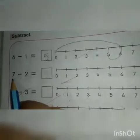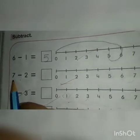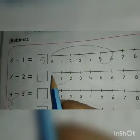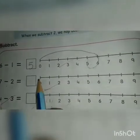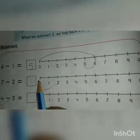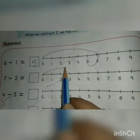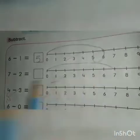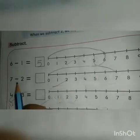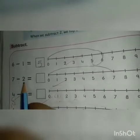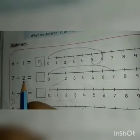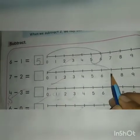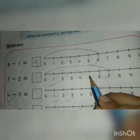Go to next line. Which number is this? This is number 7. Yes. Now we will go to 7 from 0. And this is the sign of minus. And next number is 2. Now we will go two steps back. 1, 2.